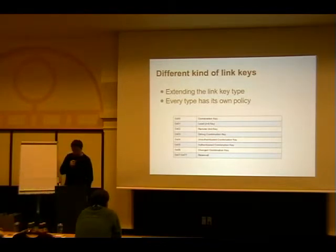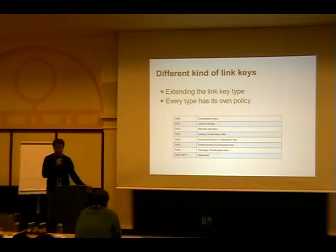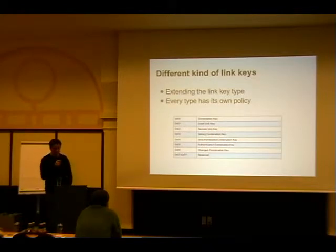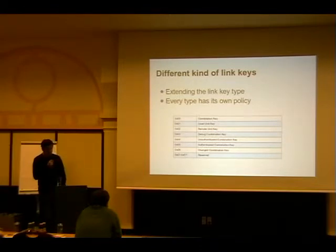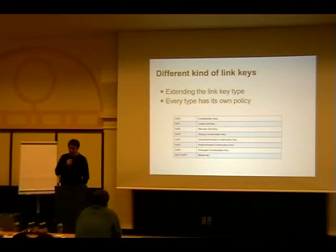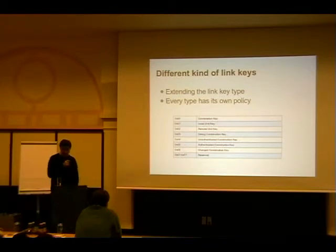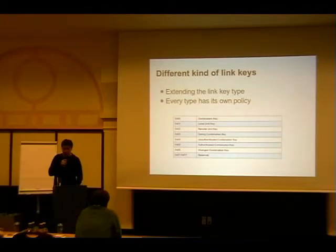Initially the link key was basically everything. The combination key is the basic link key. The local unit key and remote unit key are both deprecated but still in the spec. With the new security model they have to differentiate link keys: the debug combination key, the unauthenticated combination key — which is what you get with just works — the authenticated combination key from passkey entry or numeric comparison, and the change combination key if you've used an authenticated key and changed it.